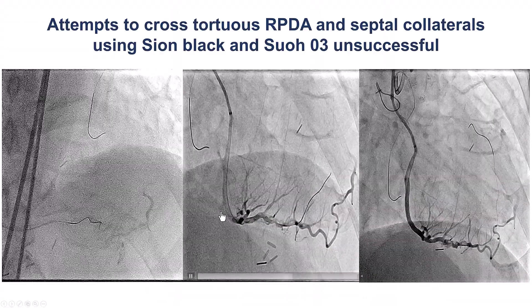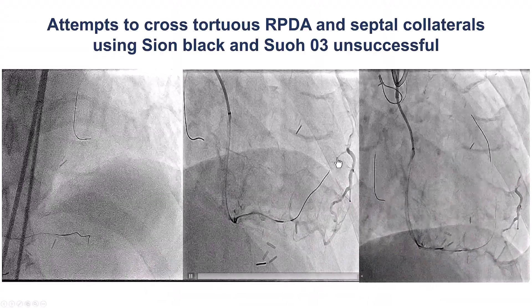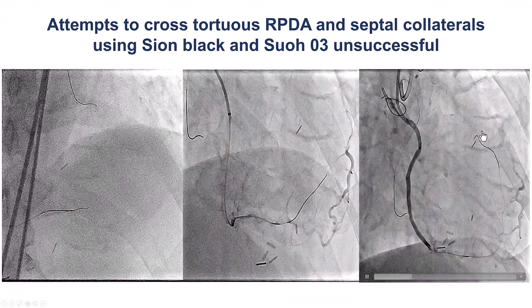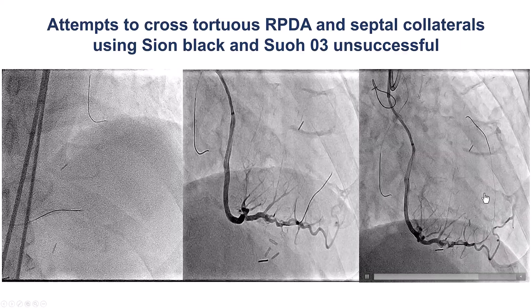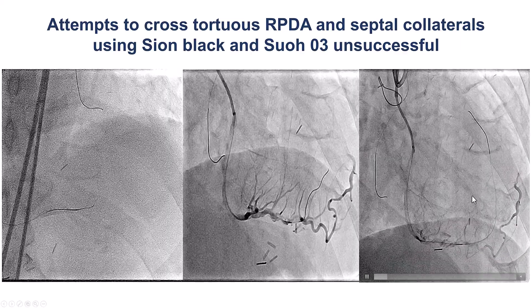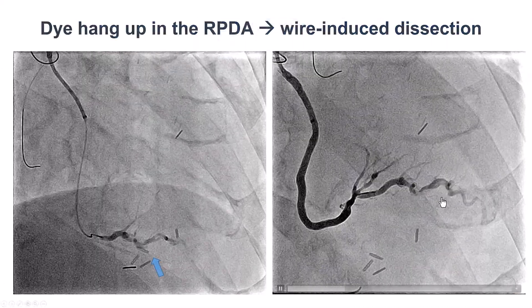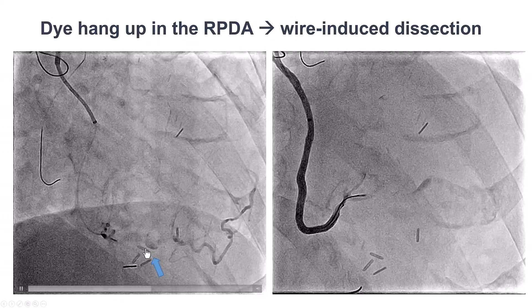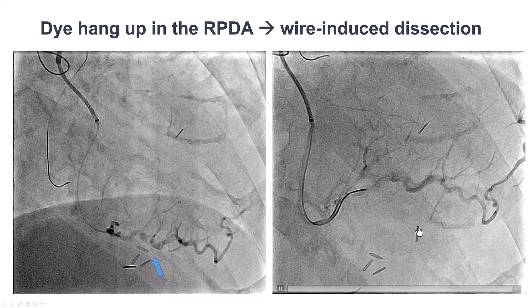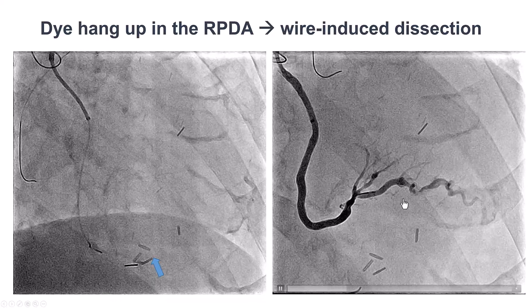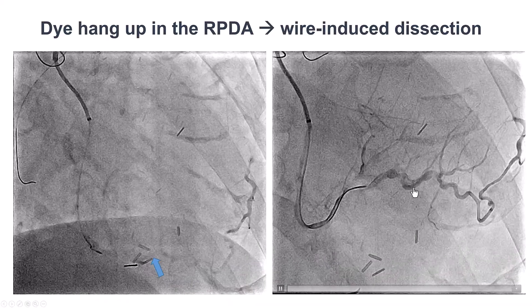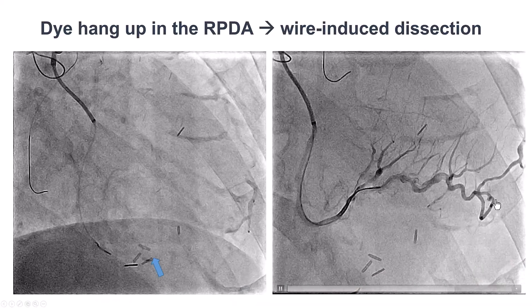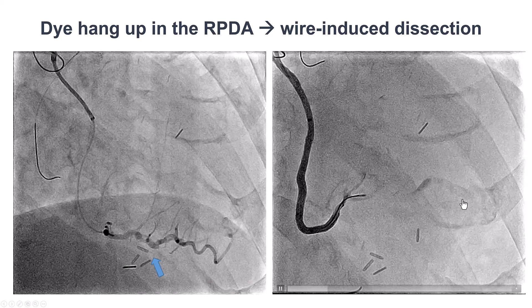We did attempts to cross through the septal collaterals from the RCA into the distal LAD. We used a Sion Black and a SUO3 guide wire, but unfortunately we were unable to enter through the septals and get into the right coronary artery. At some point, we noticed some staining on the distal portion of the posterior descending artery due to dissection. The wire had caused a dissection of the PDA, which is obviously a big problem given that the RCA supplies the distal LAD as well.